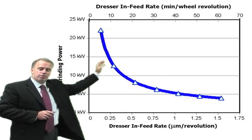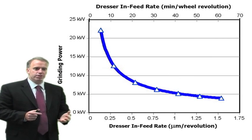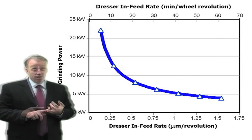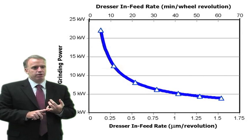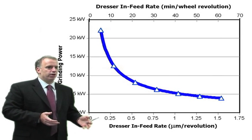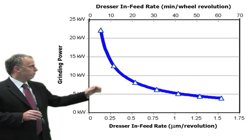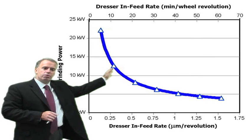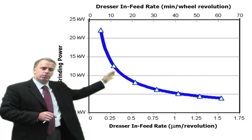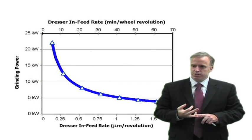However, if we dress at only 0.25 microns per revolution, our grinding power will be upwards of 25 kilowatts. That means 25 kilowatts of heat are being generated in the grinding zone, more heat into the workpiece, and therefore more burn. However, dressing at 0.25 microns per wheel rev means less wheel consumption. That's one of the dilemmas with continuous dress grinding.